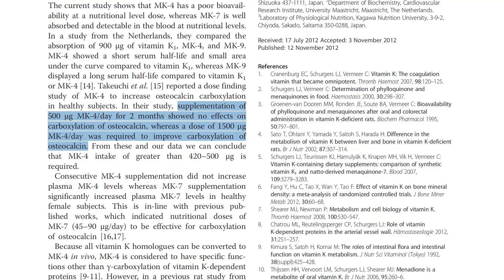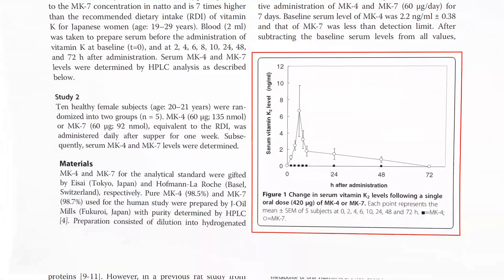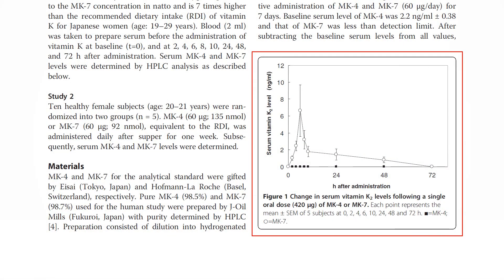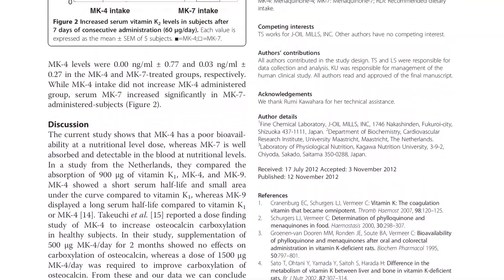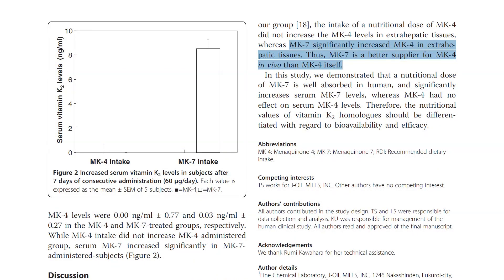Enter MK7. MK7 has a much longer half-life in the blood and appears to be better at carboxylating these proteins. Not only does it seem to be cleaved into MK4 in the tissues, but MK7 may actually be the specific form needed in some tissues. Conversely, MK4 cannot be converted by humans to MK7. So we get the best of both worlds from MK7, and that is why it is the preferred form for supplementation and the best studied form.